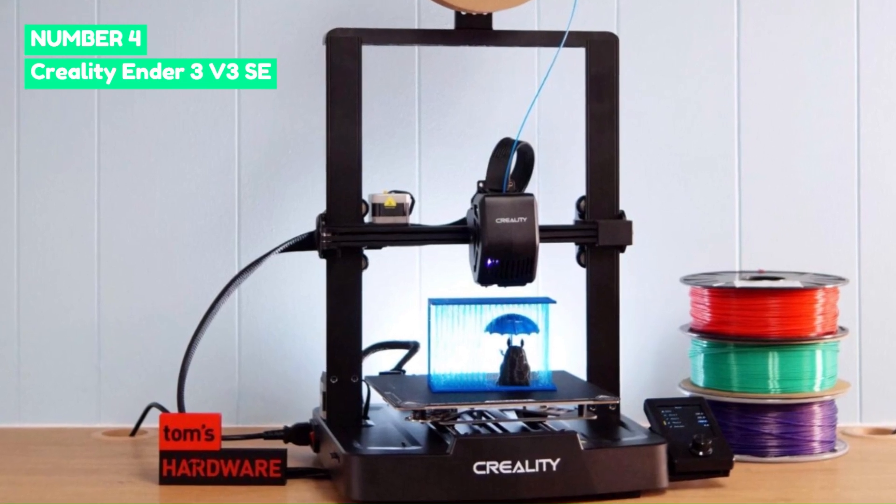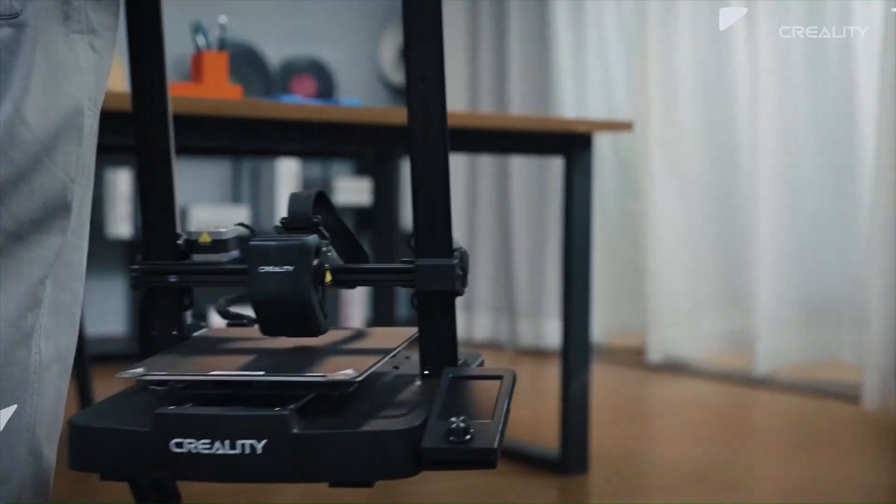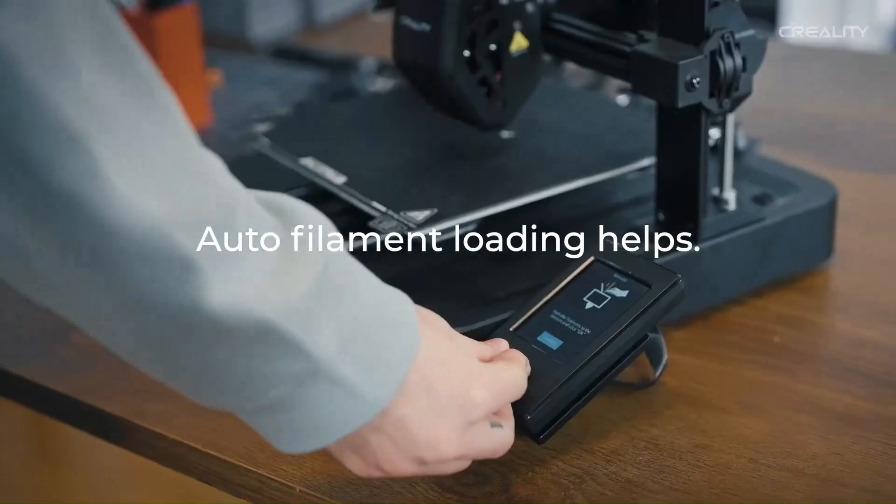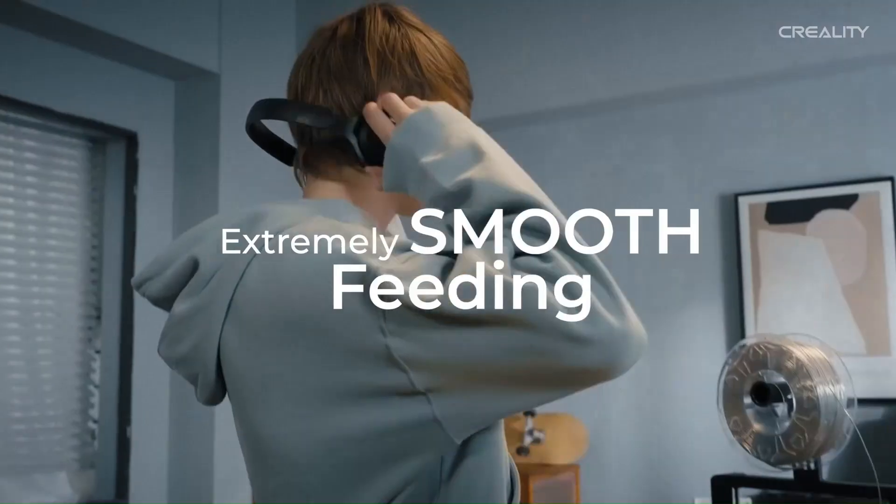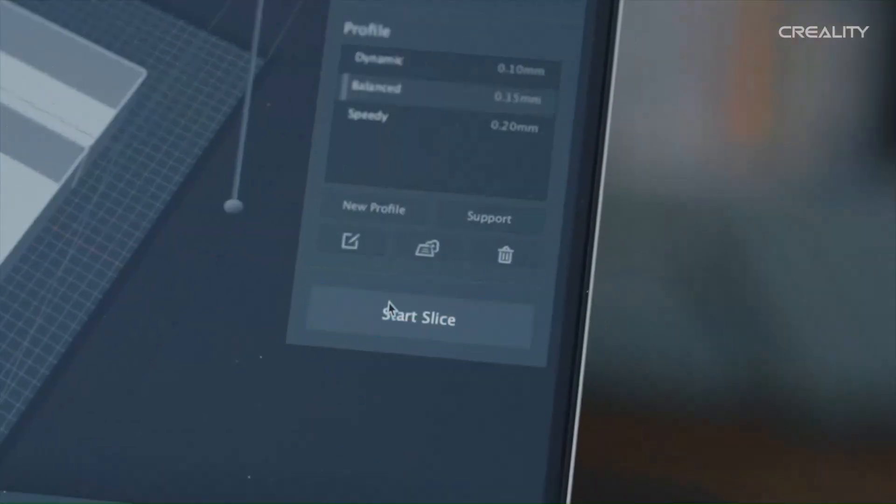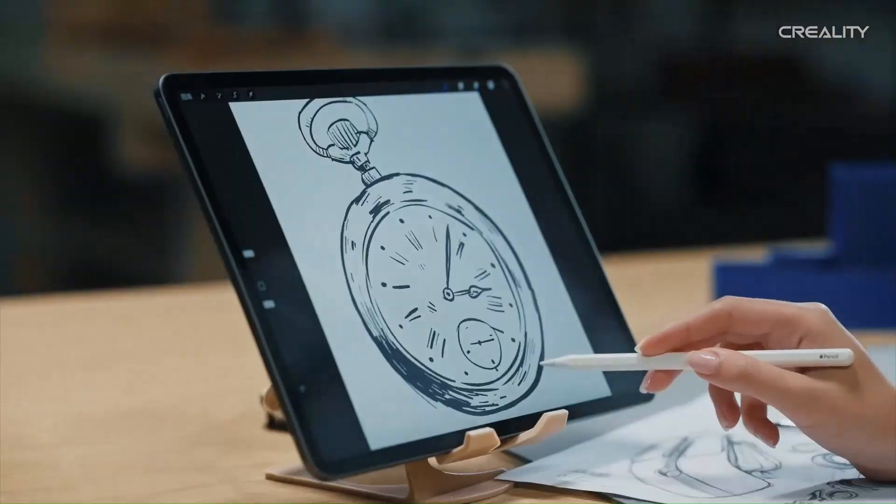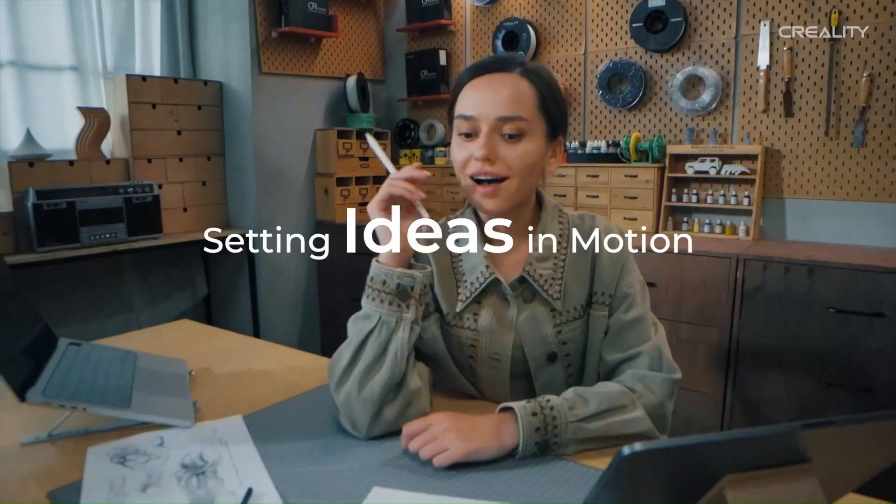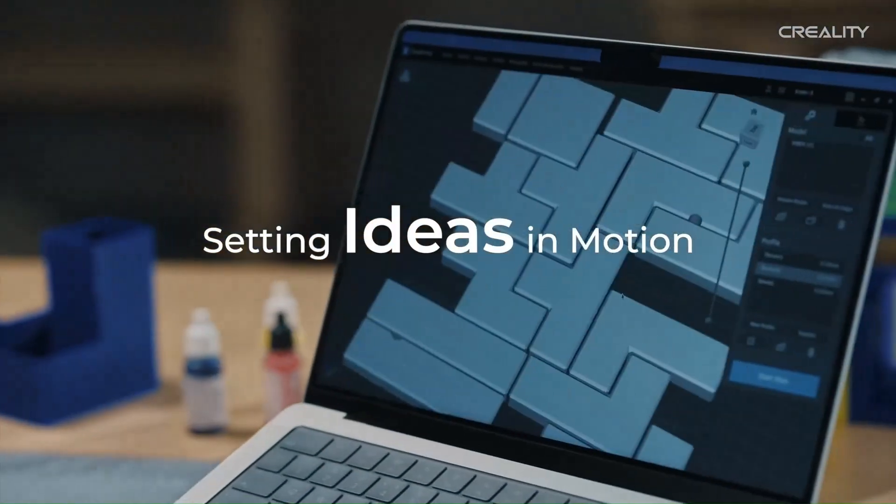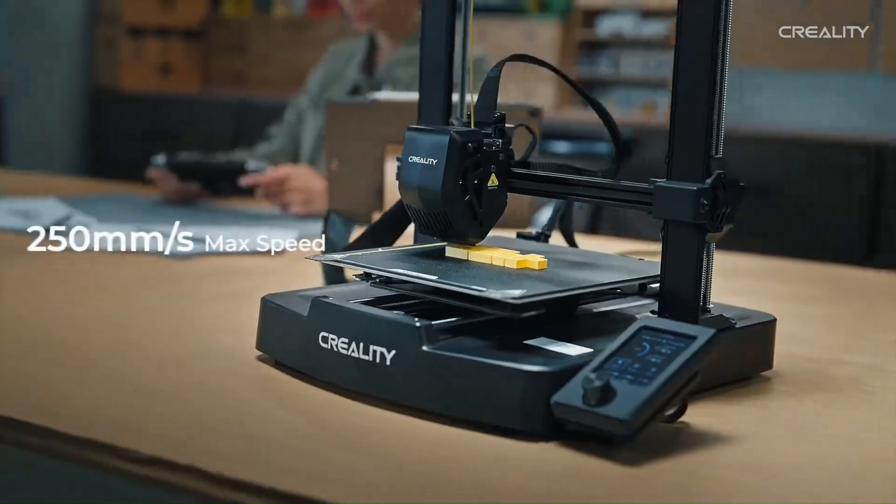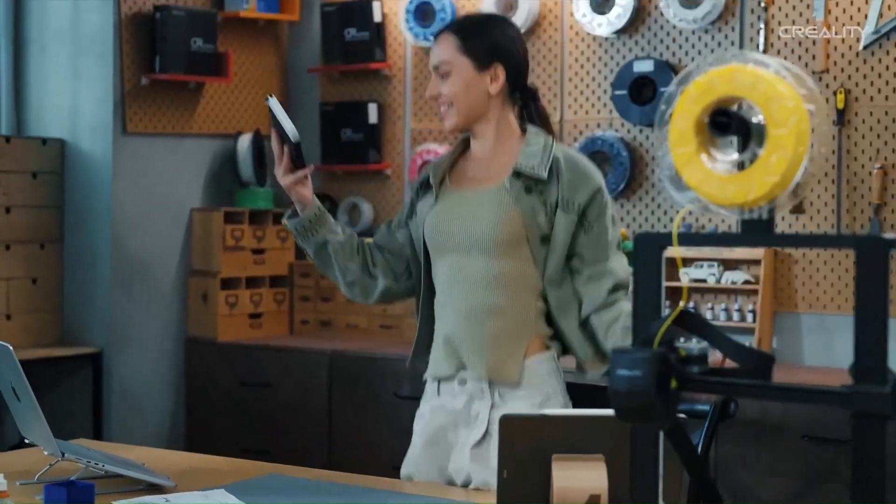Number 4: Creality Ender 3V3 SE. The Creality Ender 3V3 SE is a budget-friendly 3D printer that delivers solid performance for beginners and hobbyists. Priced under $200, it offers auto-bed leveling with CR-Touch, a sprite-direct extruder for better filament handling, and high-speed printing up to 250mm per second, a significant improvement over earlier Ender models.